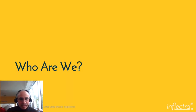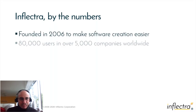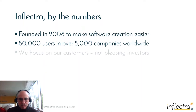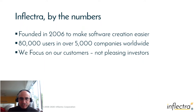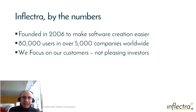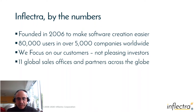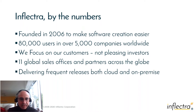For those new to Inflectra — who are we? We were founded in 2006 to make software creation easier. Currently we have about 80,000 users in about 5,000 companies worldwide. A key differentiator is that we focus on our customers, not pleasing investors. We are a private company and have not taken any venture capital, so we build features that our users actually need rather than ones that are just trendy. We release new versions roughly every six weeks using agile methodologies.